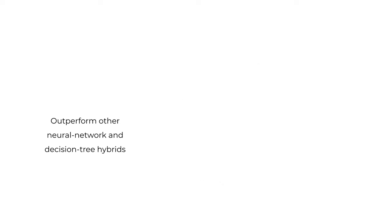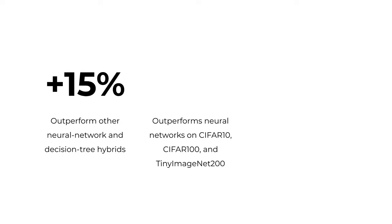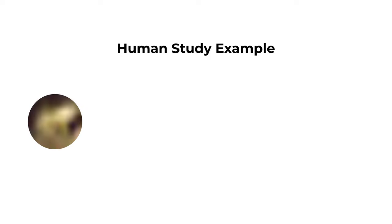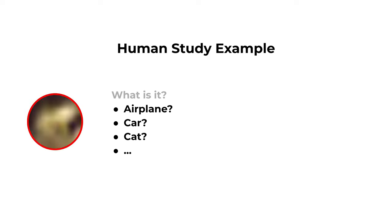Our MBDTs are more accurate than other neural network and decision tree hybrids by up to 15%. Our MBDTs are also more accurate than the original neural networks by 1%. Finally, MBDTs outgeneralize the original neural networks by up to 16%. We conduct a human study where participants classify super blurry images into one of 10 classes — by the way, this is a frog. We then repeat the study, except the second time participants are given model predictions and explanations.